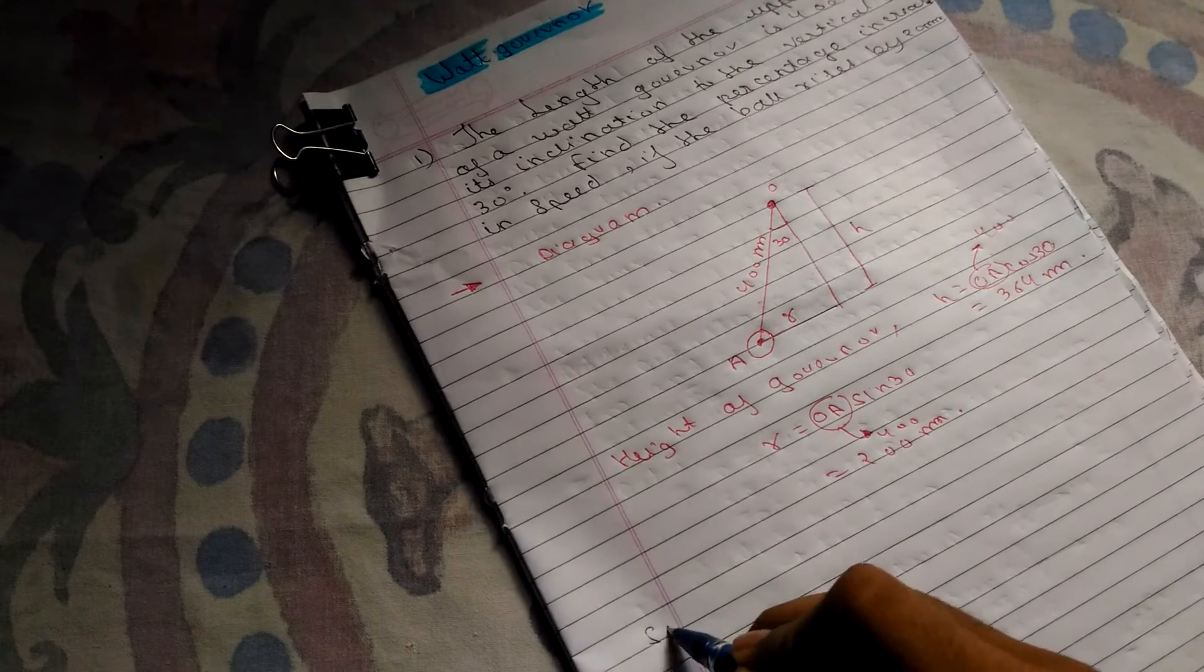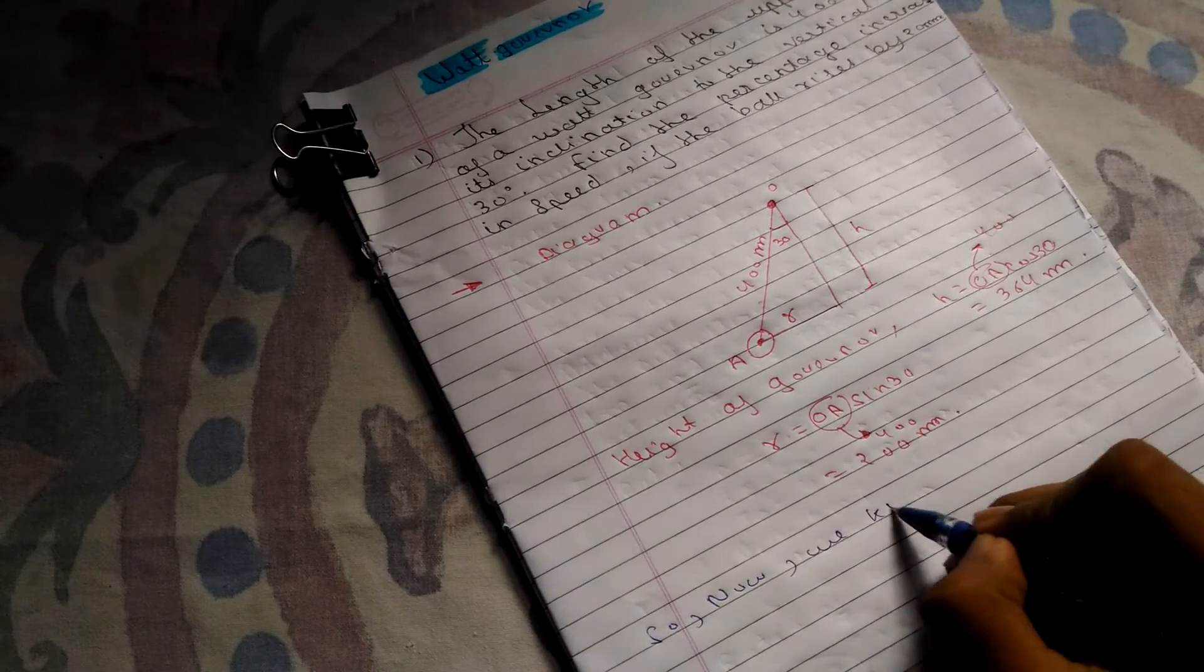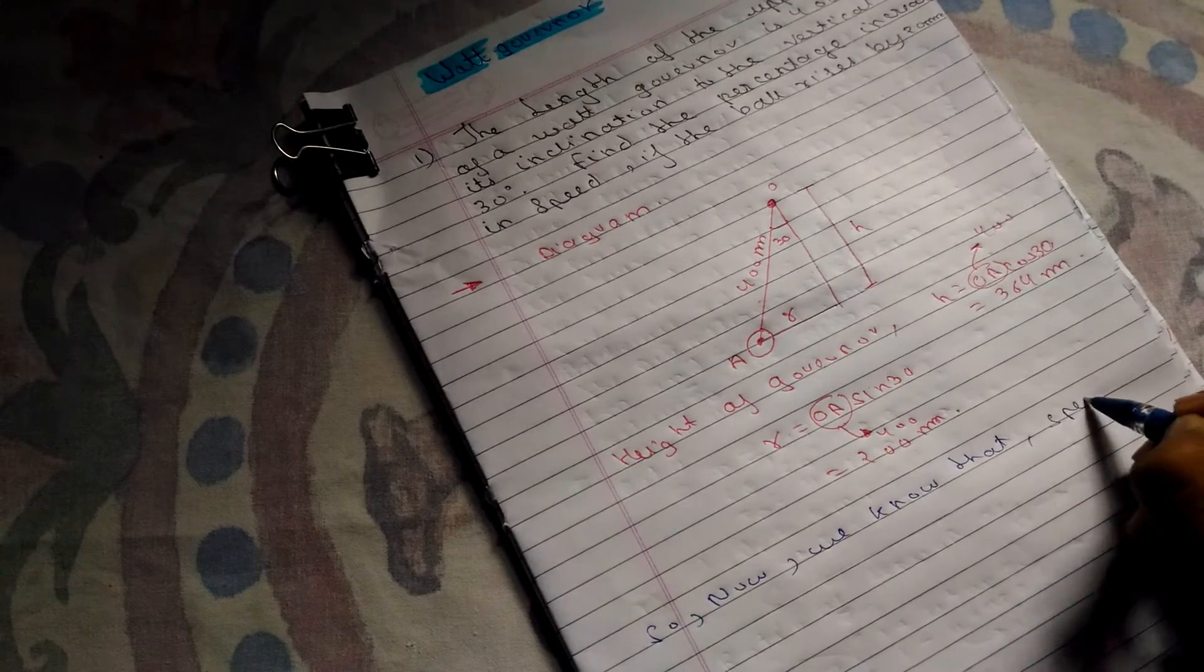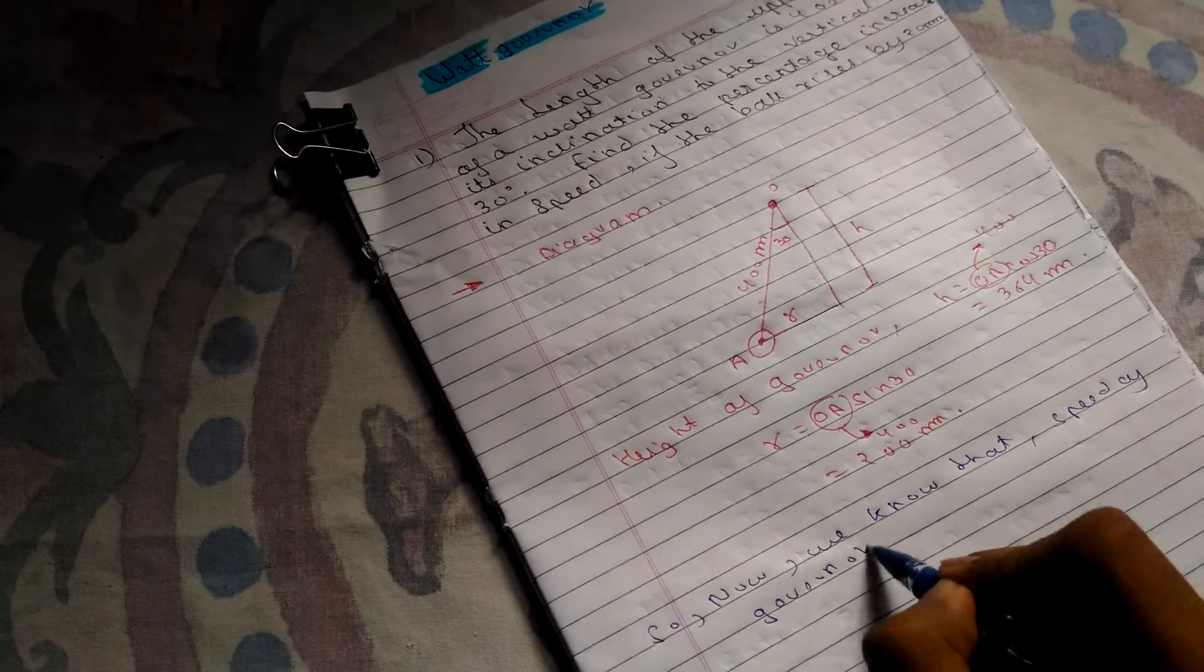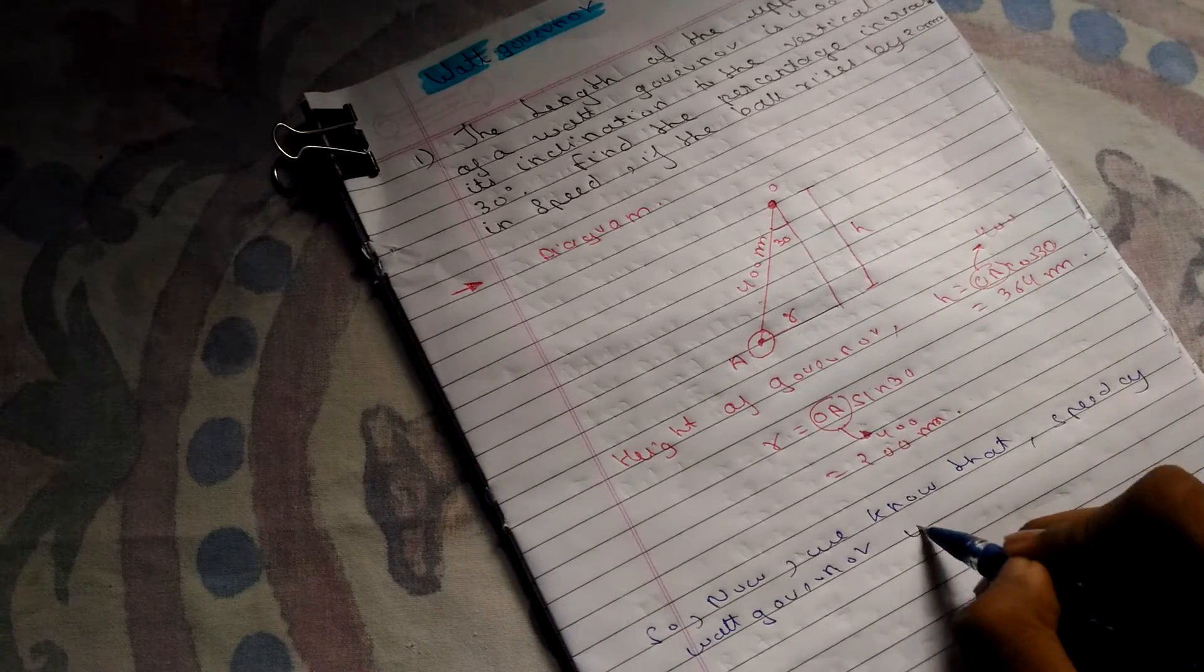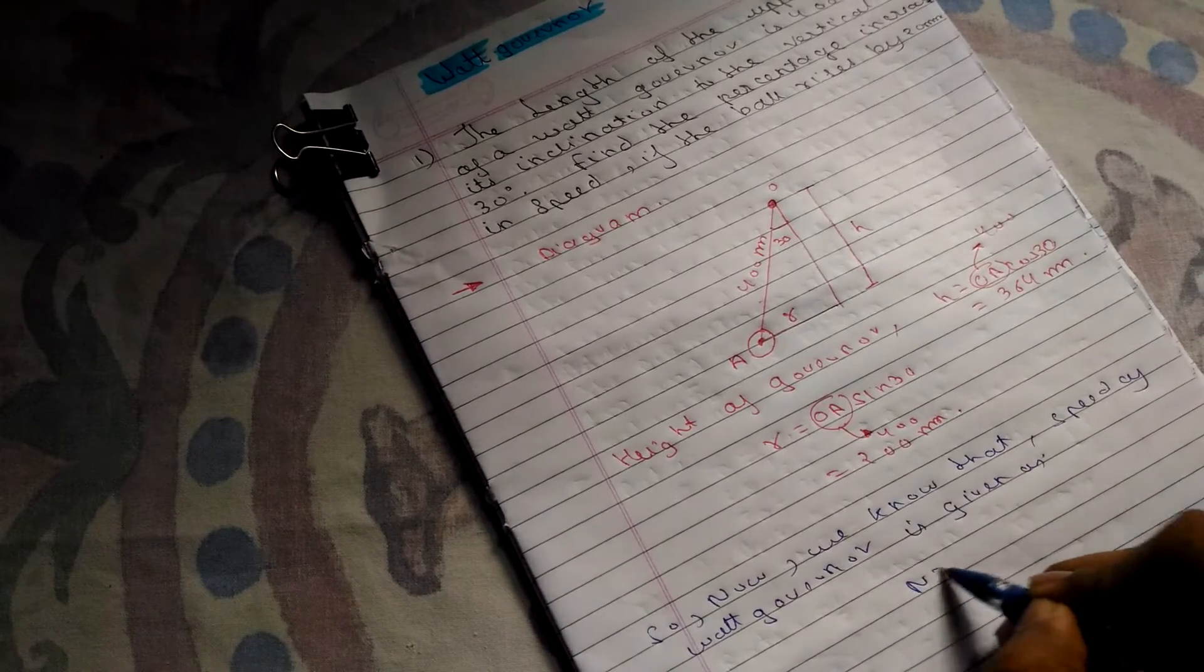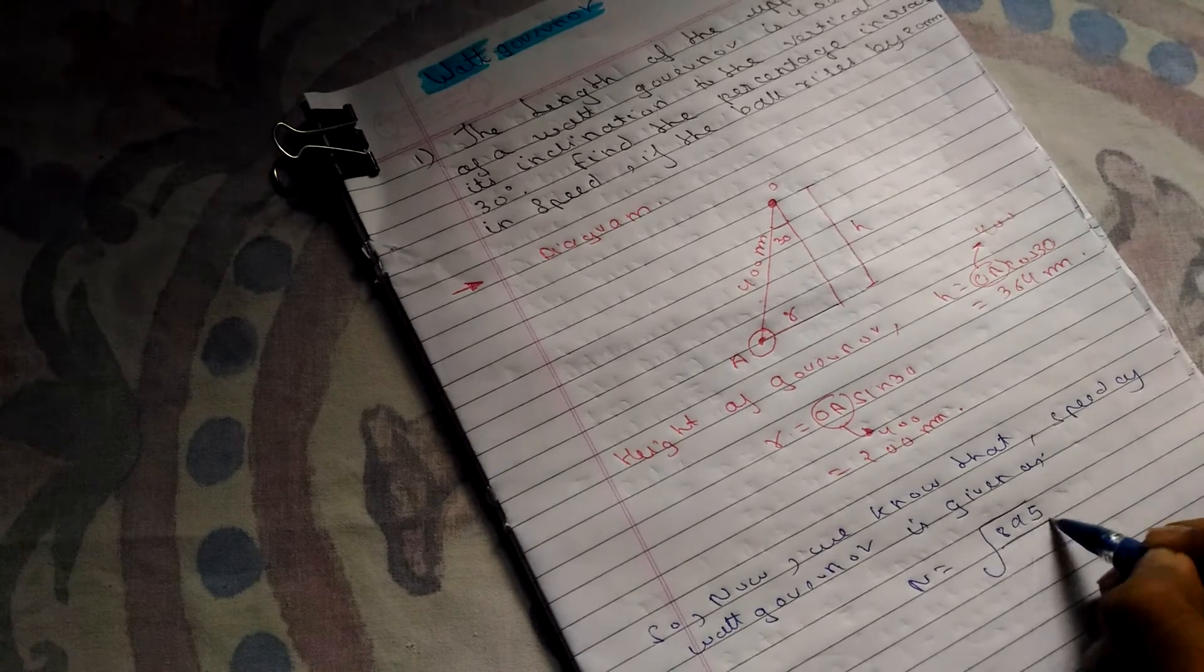Now we know that the speed of the Watt governor, N, equals the square root of 895 upon H.